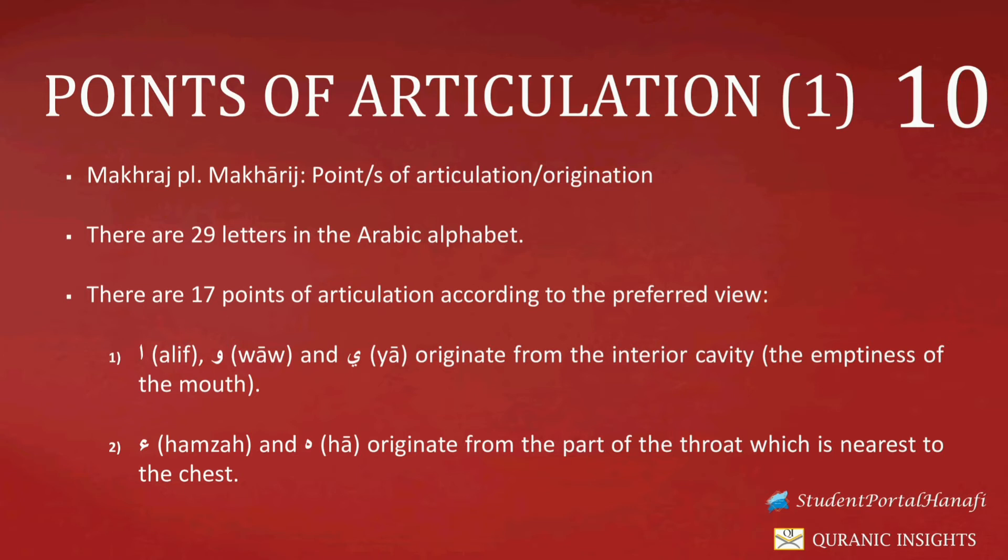Whenever we find any of these three letters — Alif, a Wao sakinah with a dhamma before it, or a Ya sakinah with a kasra before it — these three letters will originate from the interior cavity, the emptiness of the mouth. This refers to that portion of the mouth which comes right in the middle. Taking the example of Abasarihim, the Alif between the Saad and the Ra is pronounced such that the sound comes from the middle, the emptiness of the mouth.